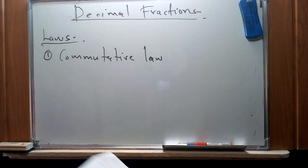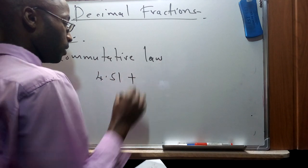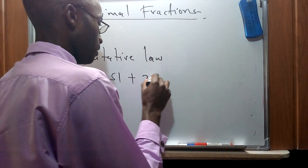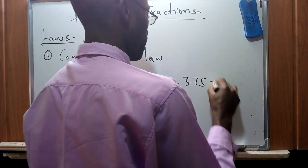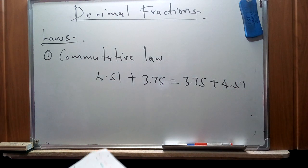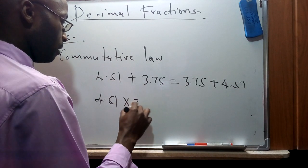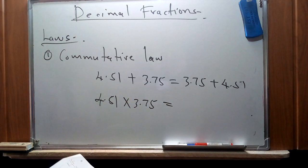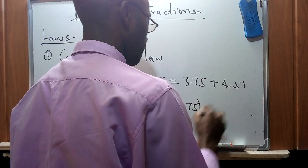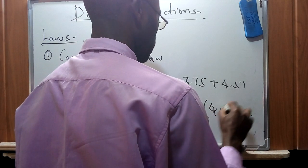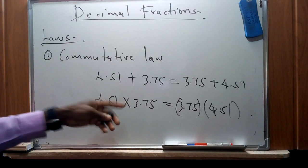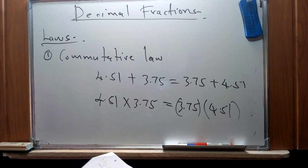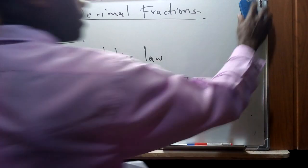For the commutative law: if we have 4.51 + 3.75, this can be expressed in the same order as 3.75 + 4.51. For multiplication, 4.51 × 3.75 can also be expressed as 3.75 × 4.51. The quantities on the left and right side comply with each other, and therefore decimal fractions obey the commutative law of arithmetic operations.